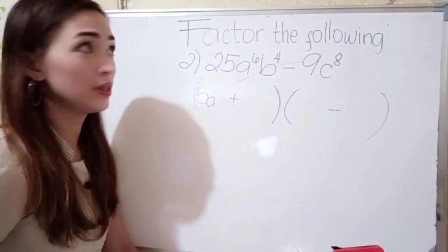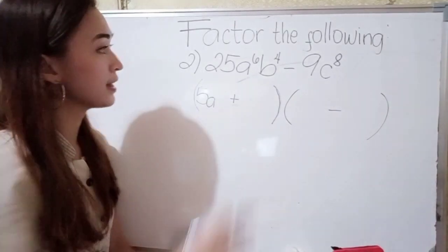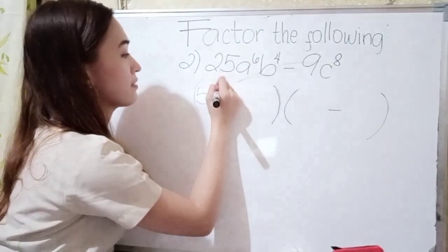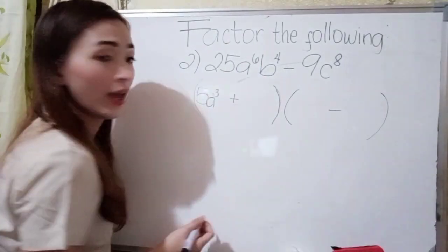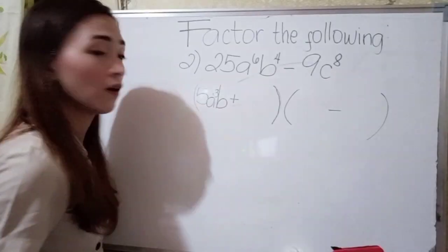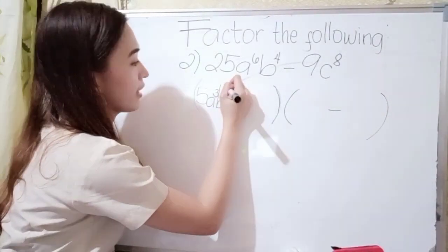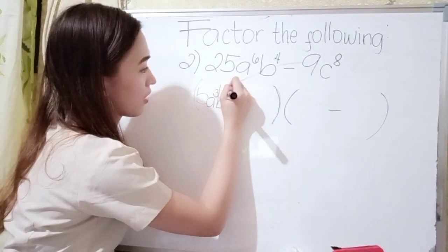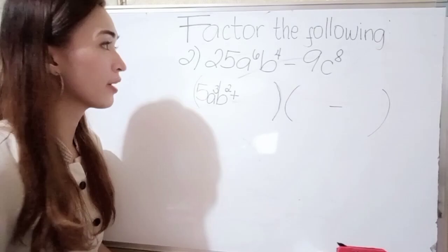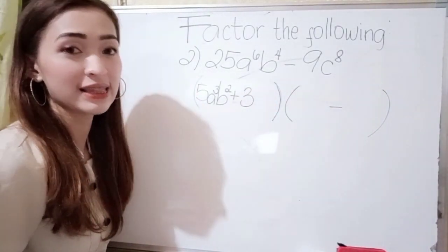Next, for the exponent just divide it by 2. So since we have 6 here, 6 divided by 2 is 3, so write 3. Next we have b, and 4 divided by 2 is 2, so write 2. Now find the square root of 9. The square root of 9 is 3 because 3 times 3 is 9.